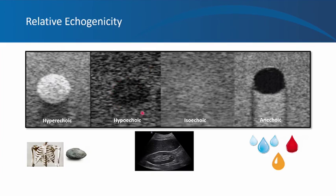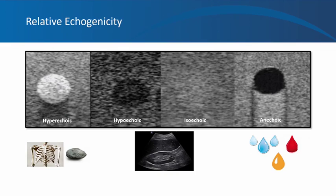A darker area compared to surrounding structures is called hypoechoic — it makes fewer echoes than its surroundings. An example would be the renal medullary pyramids compared to the cortex, or the renal cortex compared to the liver. When a structure is of pretty much the same intensity as surrounding area, it is isoechoic — an example is renal cortex compared to liver. An anechoic structure makes no echoes and appears black. Anything containing clear fluid is anechoic — blood, serous cyst fluid, and urine are all considered clear fluid for ultrasound purposes.